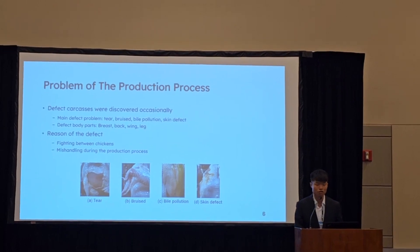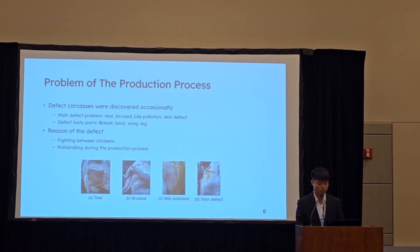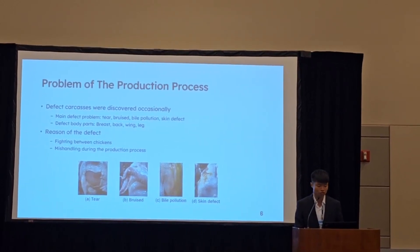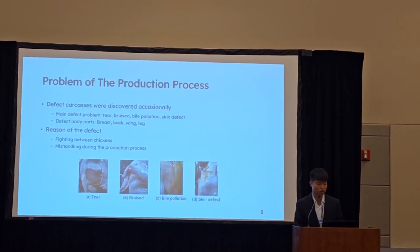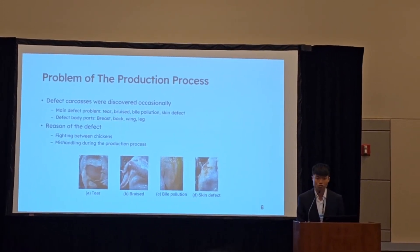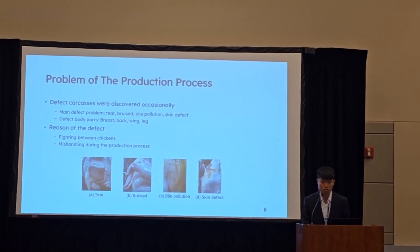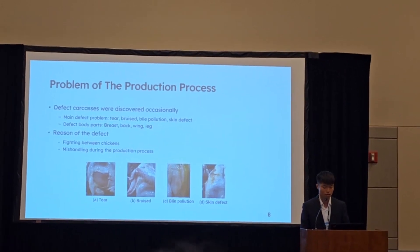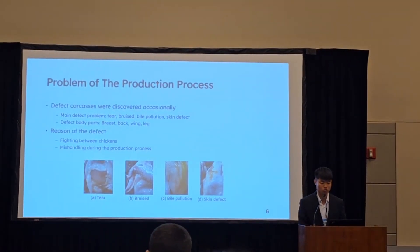No matter what type of chicken, in the slaughter process it will face some problems. Defect carcasses are discovered at the production line occasionally. The main defect problems include tear, bruise, bio-pollution, and skin defection. The main defect parts include the chicken breast, back, and wing. The reason for the defects is because chickens bite each other, causing bruise and skin defection, and workers mishandling during the slaughter process, causing tear and bio-pollution.